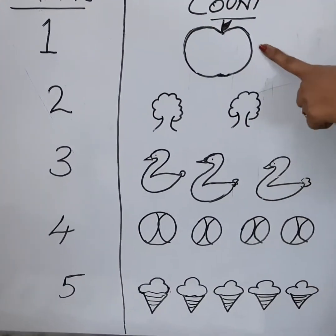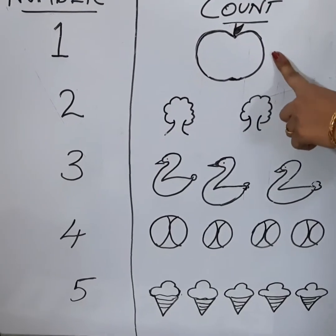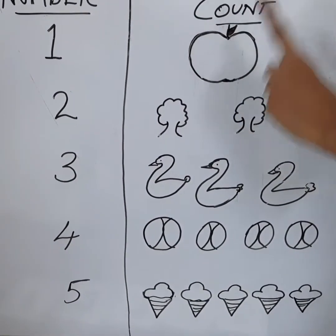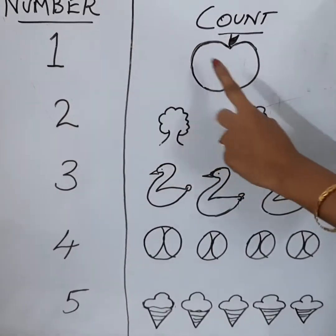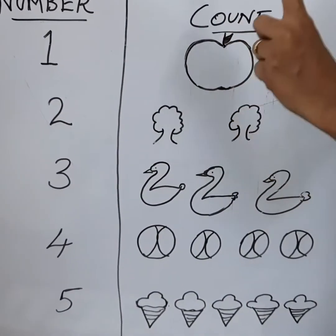What is this? Yes! Apple. How many apples are here? Number 1. Number 1. Number 1. We have 1 apple.